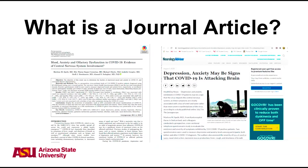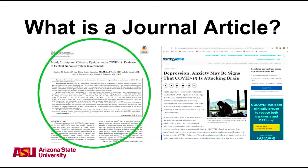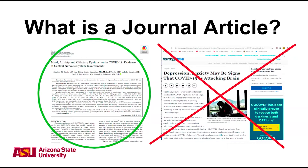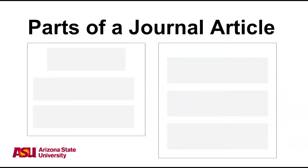First, what is a journal article? A journal article is published in an academic journal and is typically written by an expert and focuses on research relating to a particular discipline. Newspaper or magazine articles aren't as detailed or rigorously reviewed as journal articles.